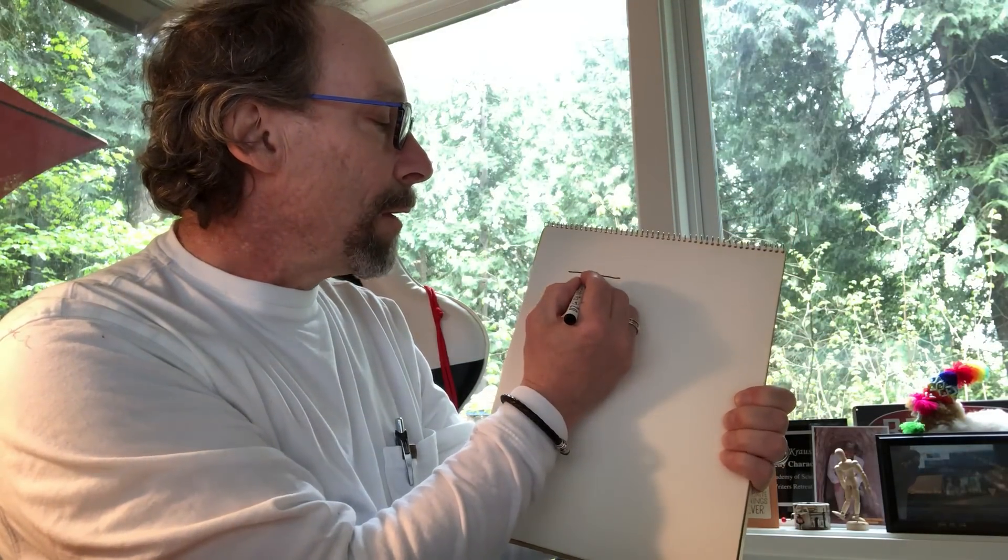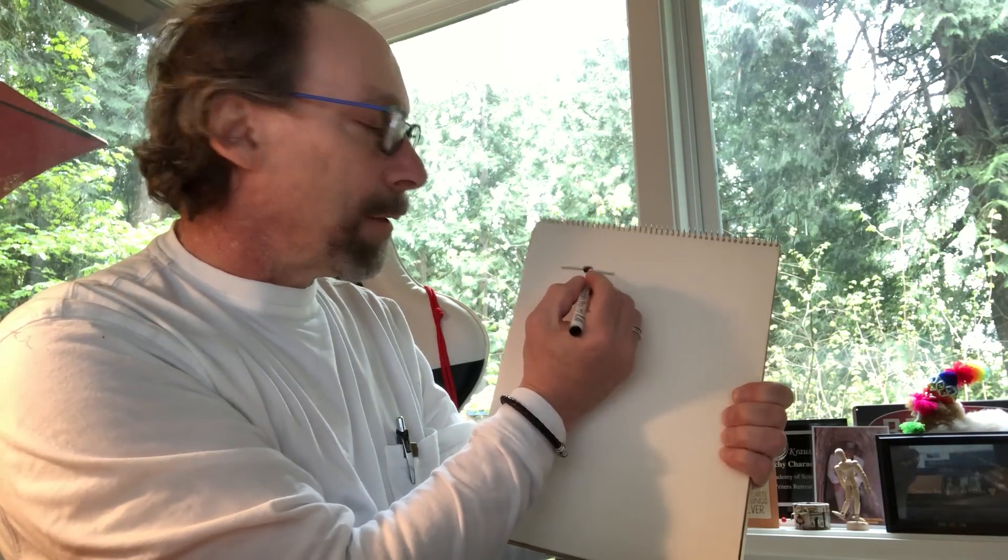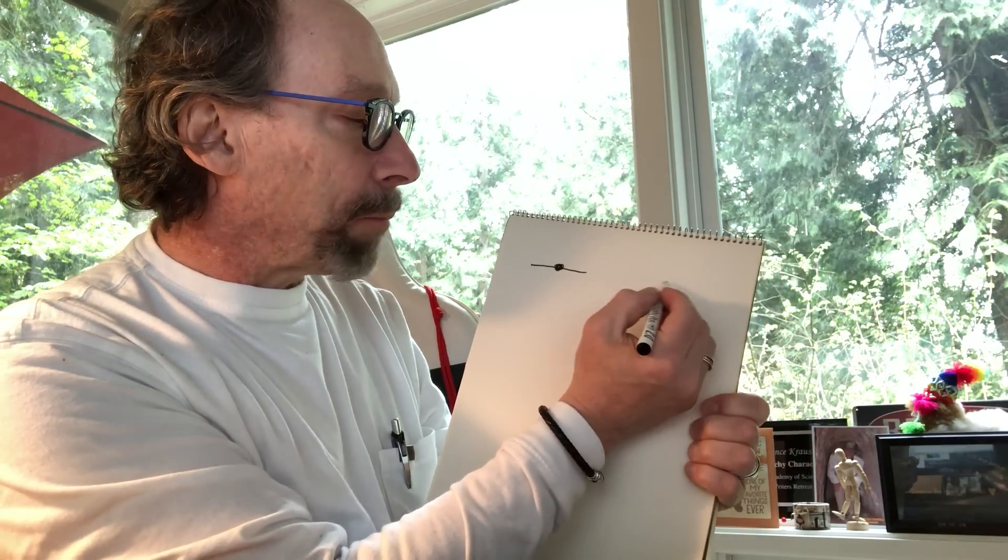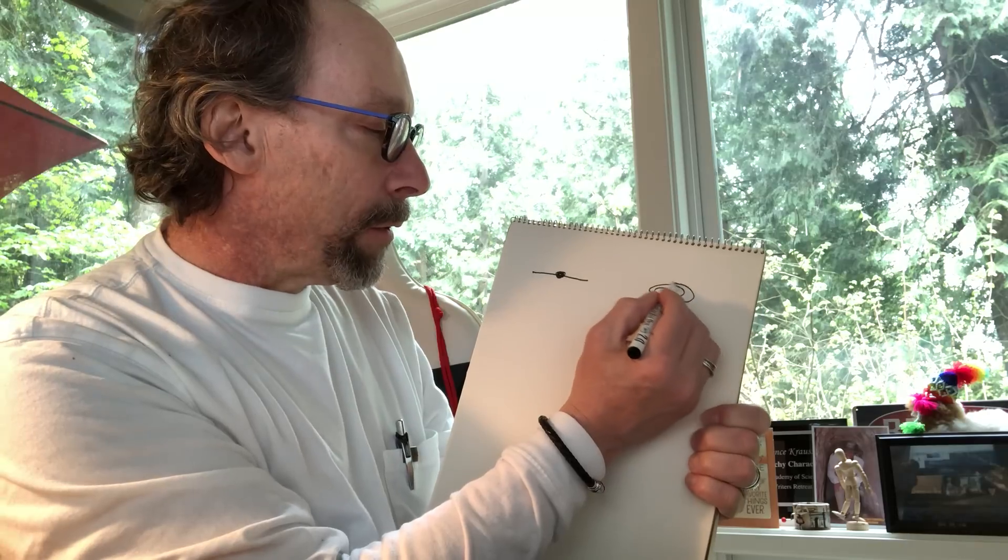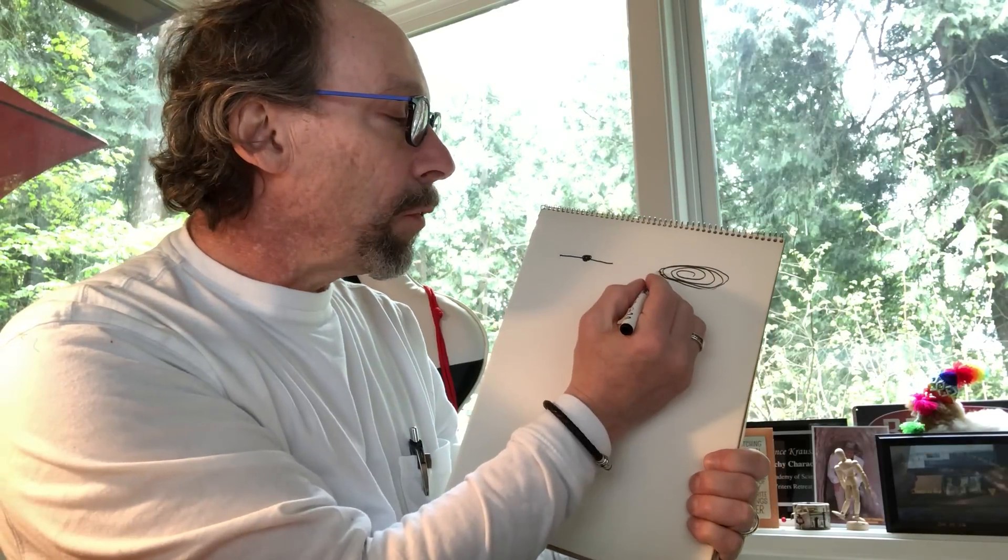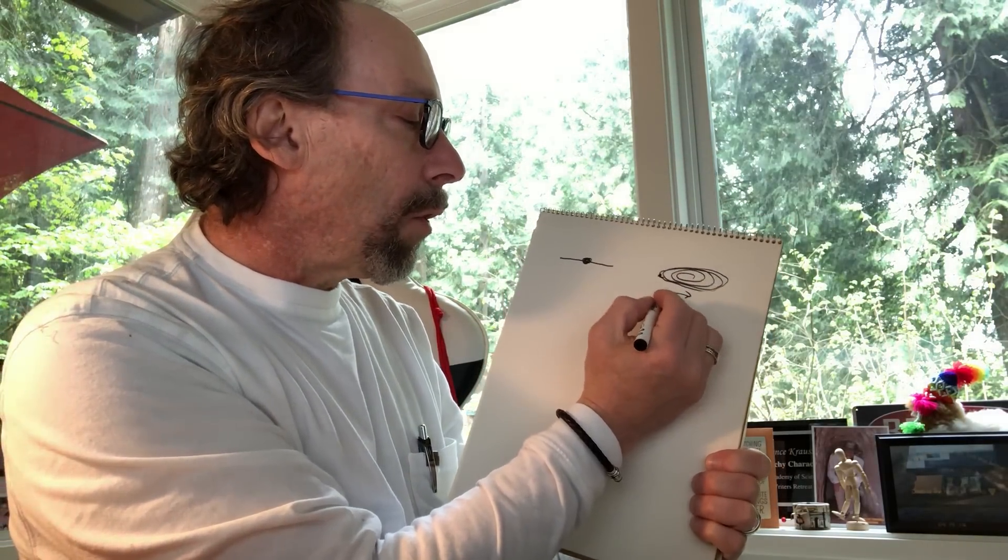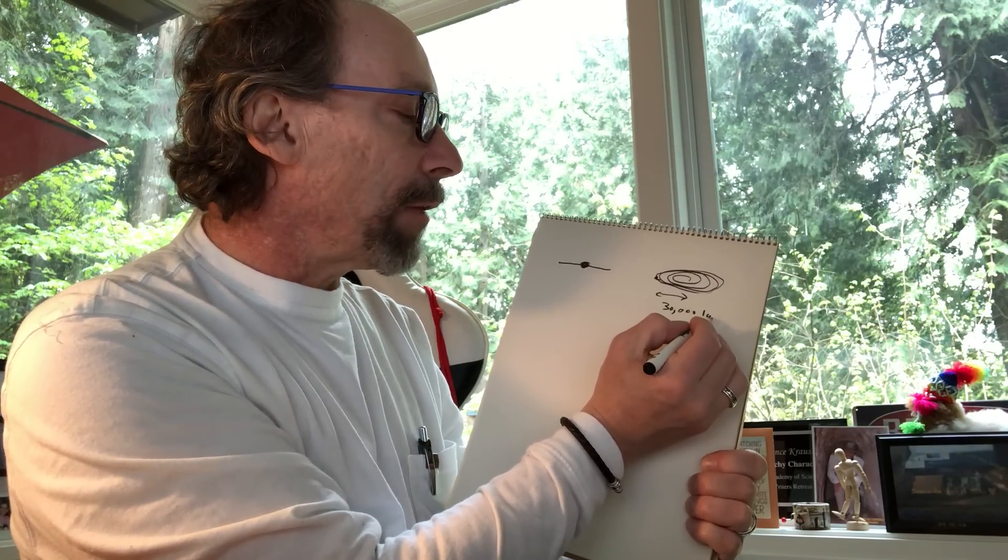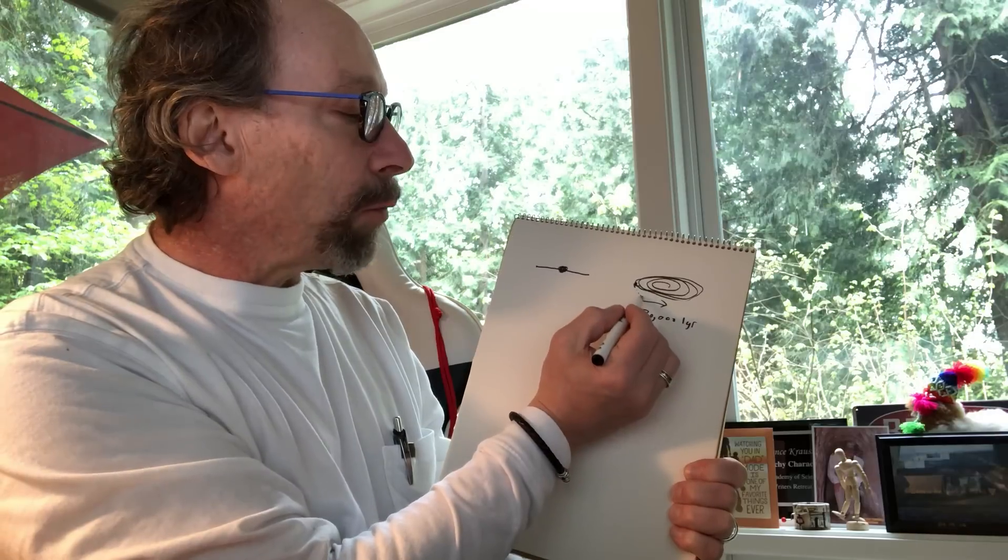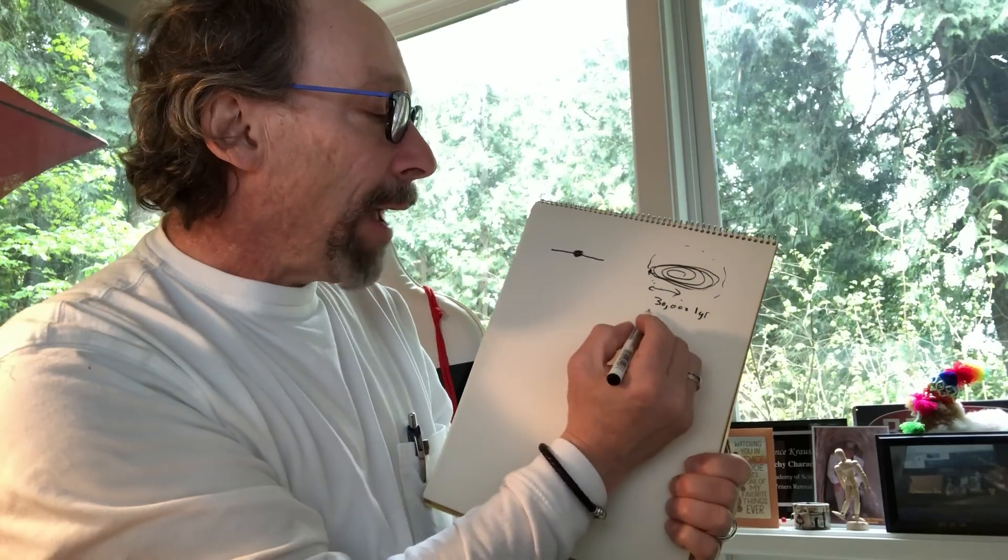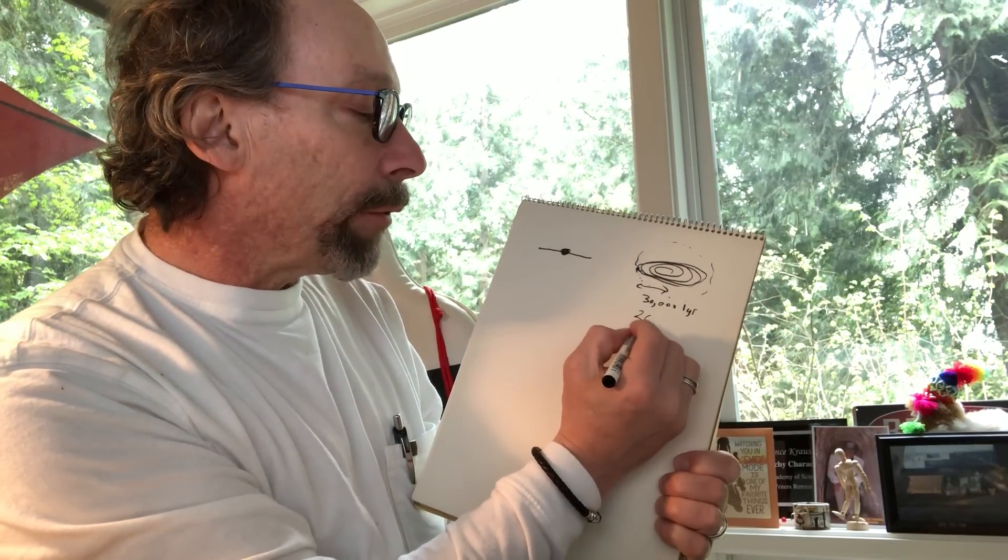Now we apply this to weighing our galaxy. Our galaxy is a spiral galaxy. Edge on, it looks like that with a bulge at the center and we're somewhere near the edge. If you look at it from top down, it looks like a spiral. We're also at the edge. The sun is about 30,000 light years from the center of the galaxy and goes around the galaxy once every 200 million years at a velocity of about 200 kilometers per second.